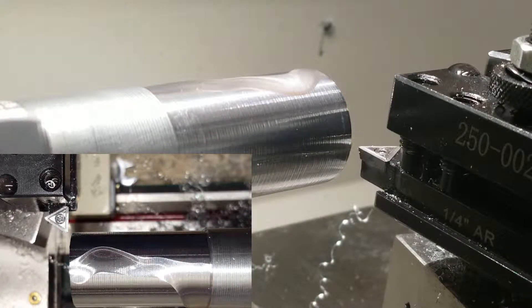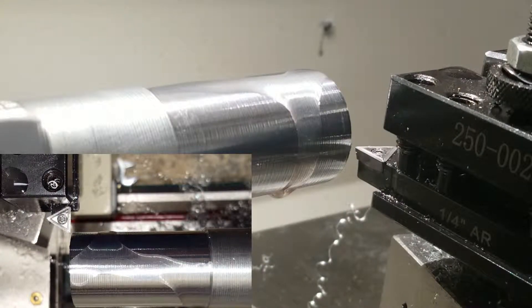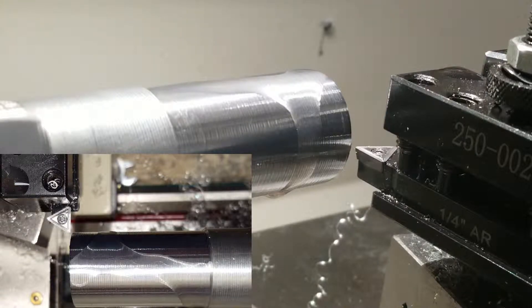I'm moving the cross slide in 10 thousandths of an inch. Same as before, I'm going to turn the lathe on. I have not changed the RPMs and I'm going to turn the power feed on.